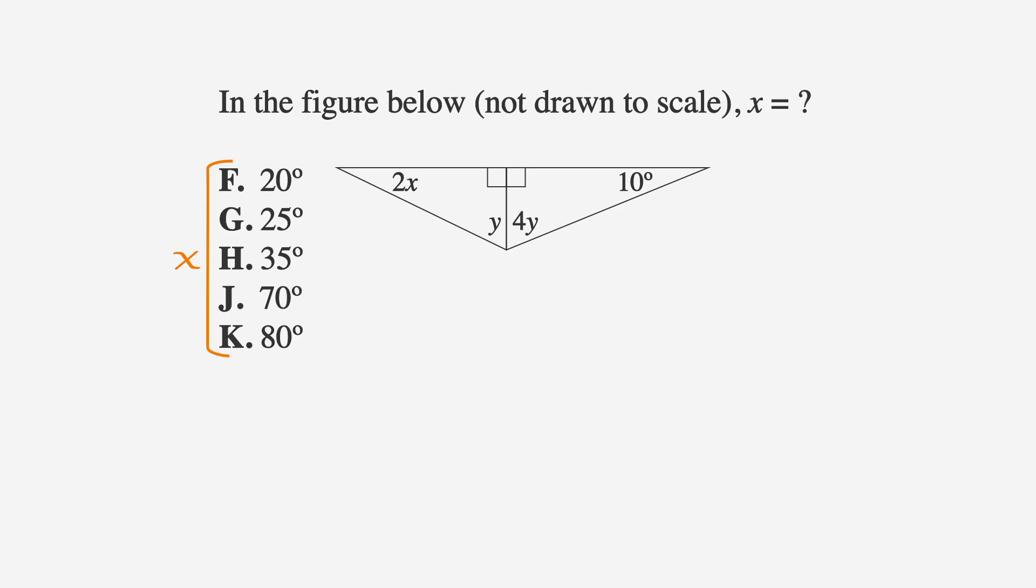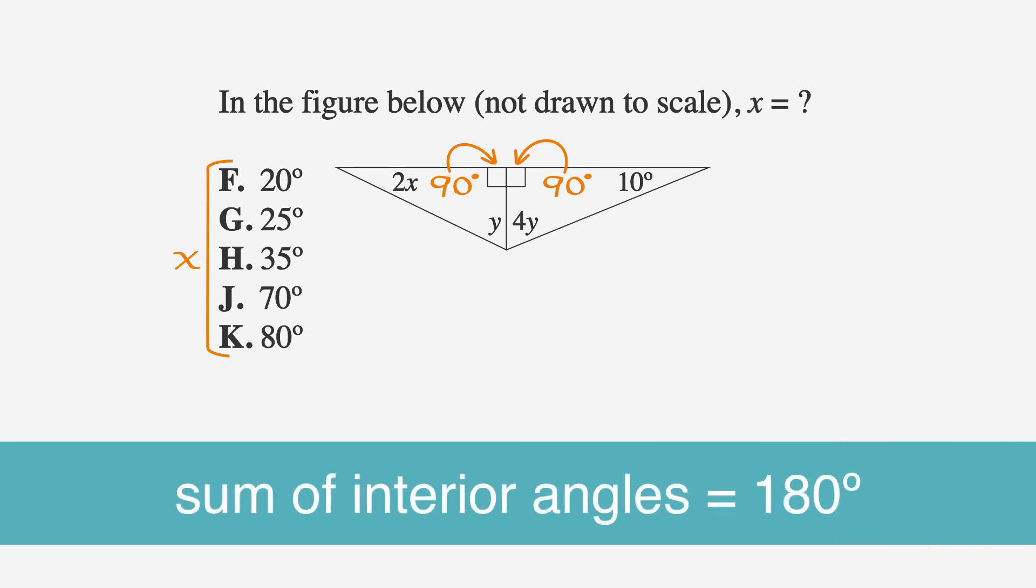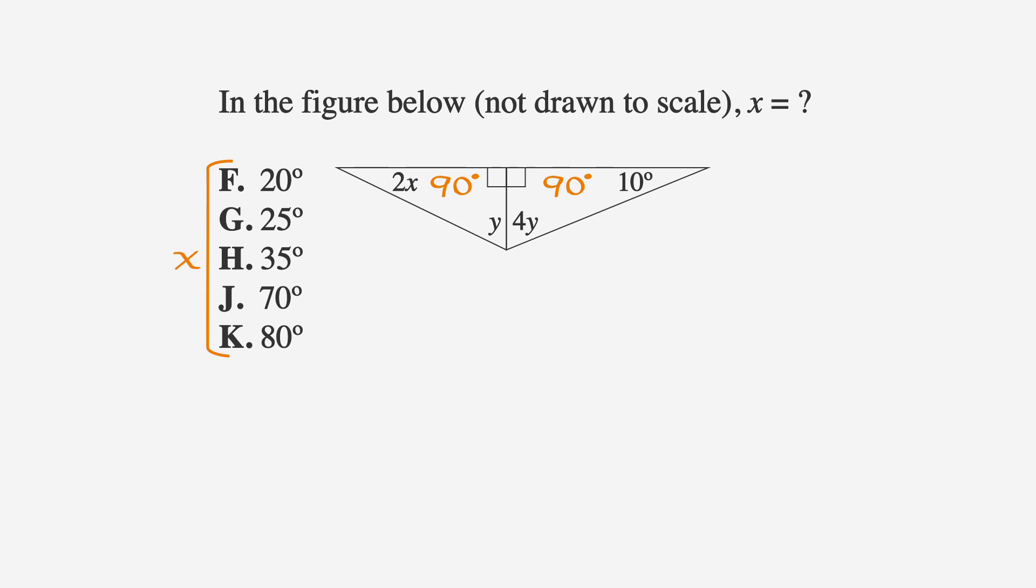Before we back-solve, we need to remember a few key facts about triangles. First, remember that the little box in the triangle means that we have a right or 90-degree angle. You'll also need to remember that the sum of the interior angles of a triangle is equal to 180. Now, let's dive in.